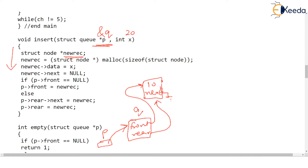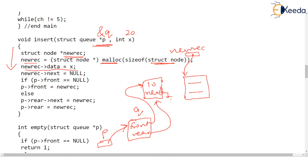There is a new pointer called new_rec. In the next statement, new_rec points to newly allocated memory and a new node is created. This node can store data and next because it is a node, and new_rec points to this newly created node. The next statement sets new_rec arrow data to 20 (because X is assigned). Then new_rec arrow next is set to null — and indeed it should be, because 20 is joining the queue as the last person and should not have anybody standing behind.